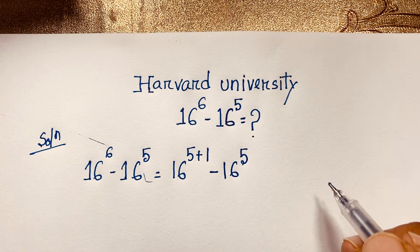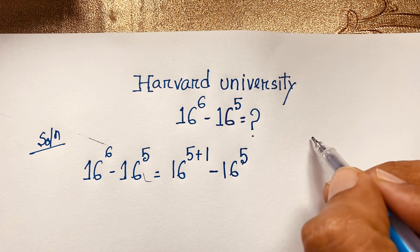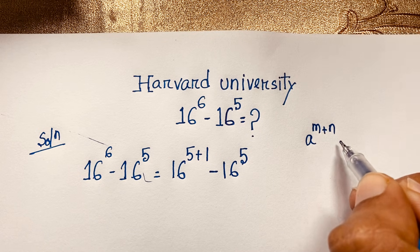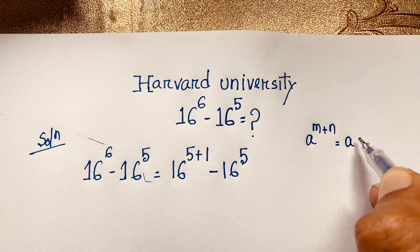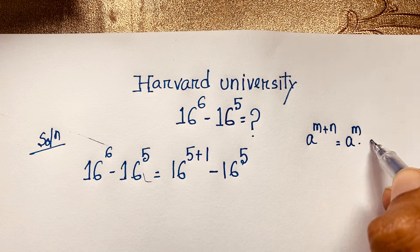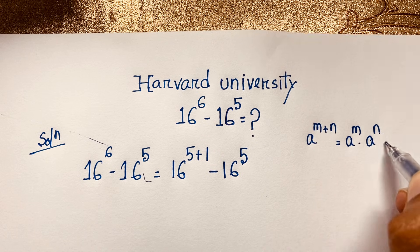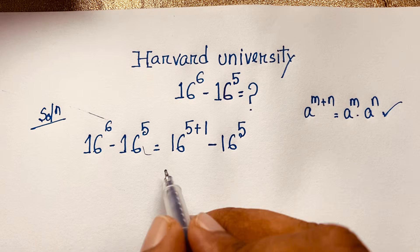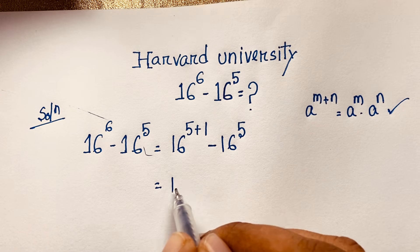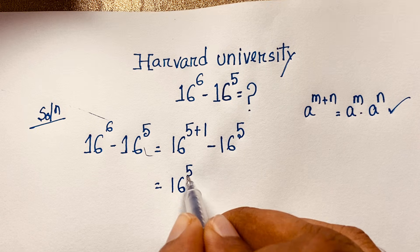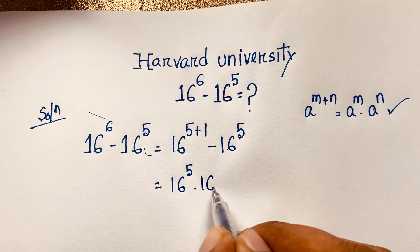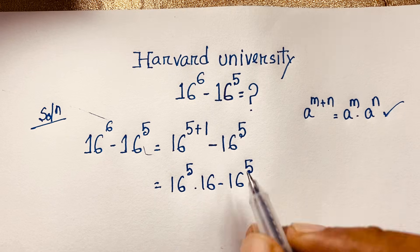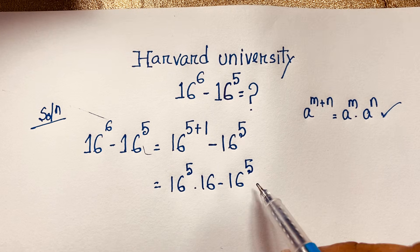Now according to the exponential formula: a to the power m plus n equals a to the power m times a to the power n. If I apply this exponential formula here, this expression becomes 16 power 5 times 16 power 1 minus 16 power 5.